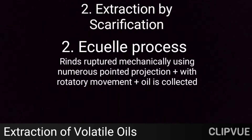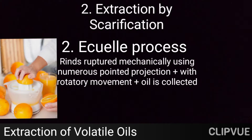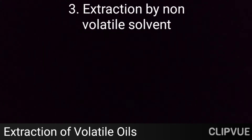The second method under scarification is the ecuelle process (E-C-U-E-L-L-E). Here the rind, which is the part to be processed, is ruptured mechanically using numerous pointed projections with a rotatory movement, and the oil is collected.